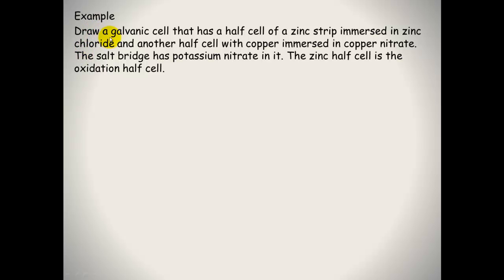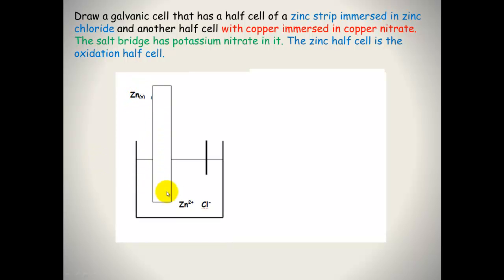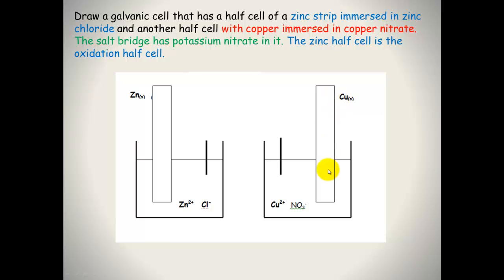Here's an example question: draw a galvanic cell with a half cell of a zinc strip immersed in zinc chloride, and another half cell with copper immersed in copper nitrate; the salt bridge has potassium nitrate; the zinc half cell is the oxidation half cell. Breaking it down: we draw a piece of solid zinc in zinc chloride solution, a copper electrode immersed in copper nitrate solution, and a salt bridge of potassium nitrate connecting the two half cells.